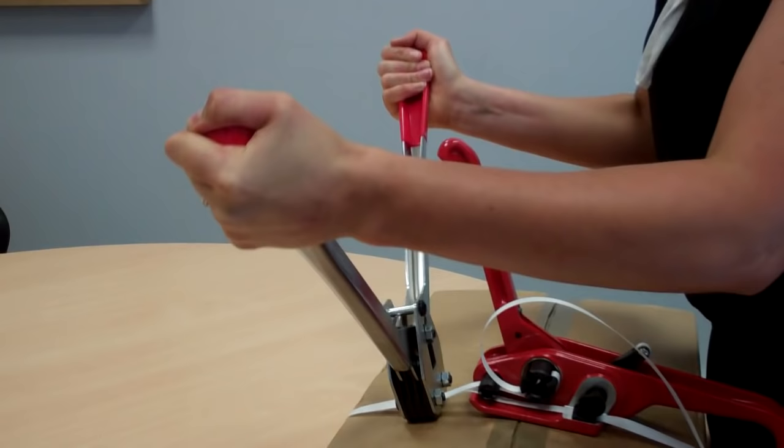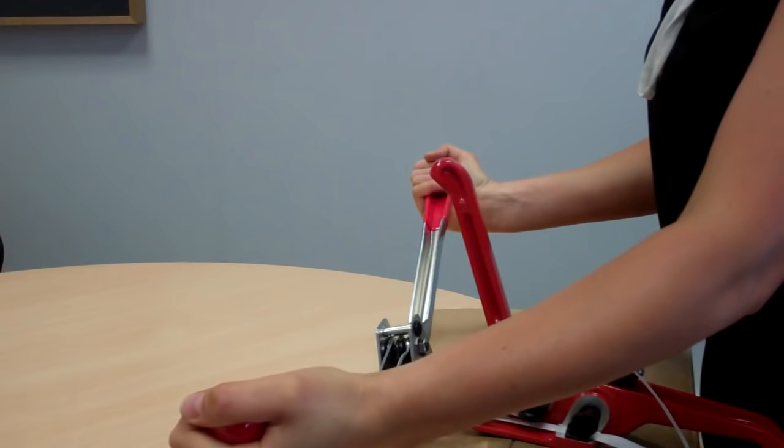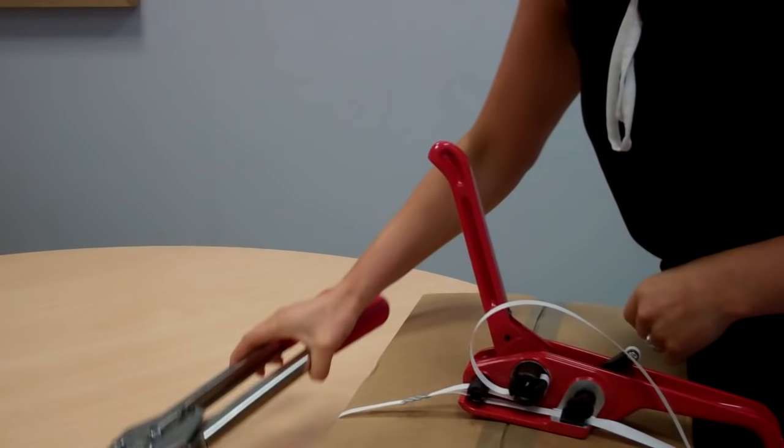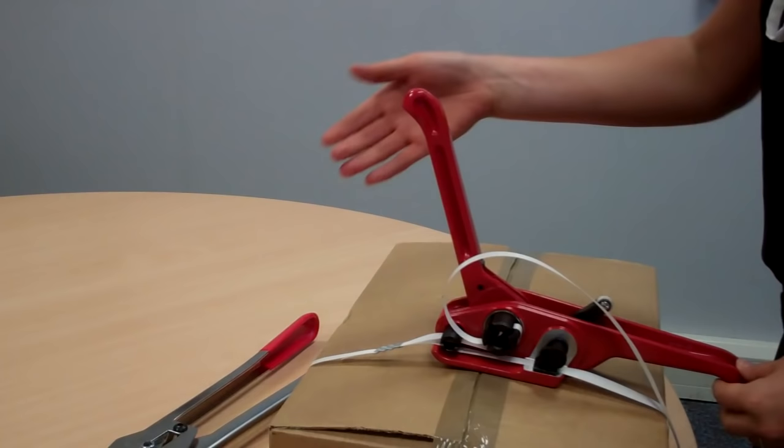Bring the two arms right up together, then release back down again. You can see the seal is now clamped around the strapping.